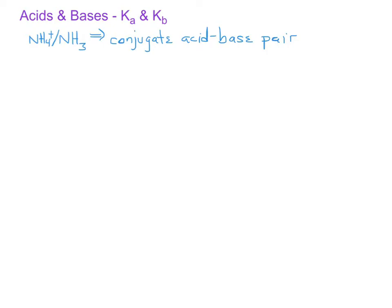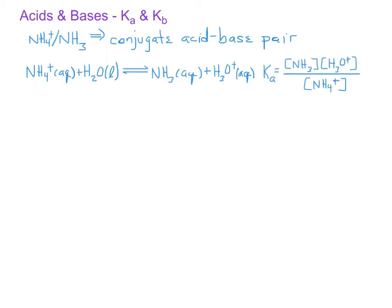We could imagine two species that are conjugate acid-base pairs, and if we have the weak acid component and it reacts with water, we would get an equation such that the equilibrium constant for that would be Ka, or the acid ionization constant.